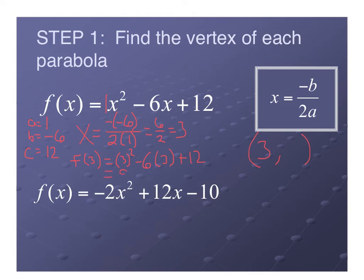So what I have is 9 minus 18 plus 12. So 9 minus 18 is negative 9 plus 12 gives me positive 3. And it's just a coincidence that it is the same number as the x-coordinate. It's not always going to be that way. But for this one, we get (3, 3) for our vertex.